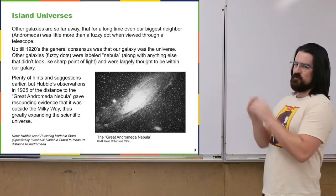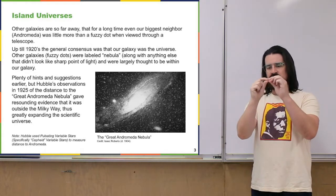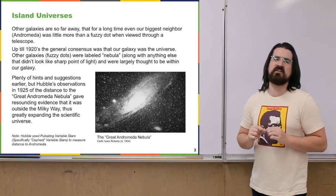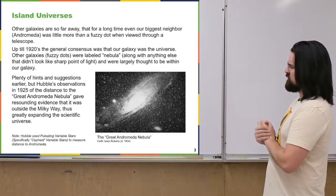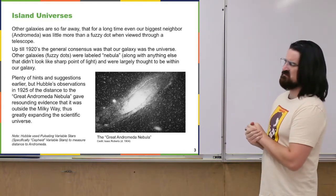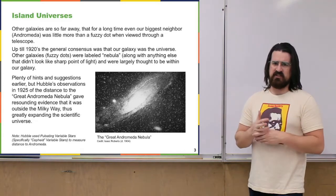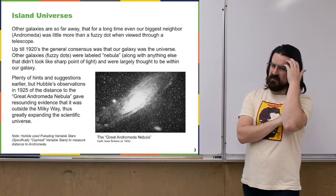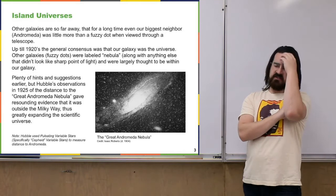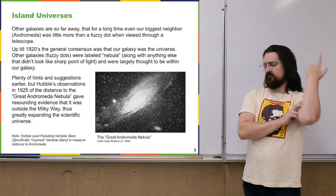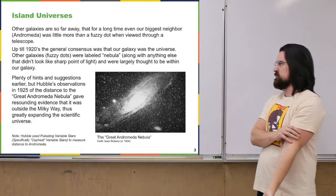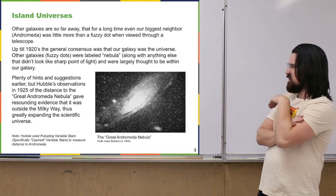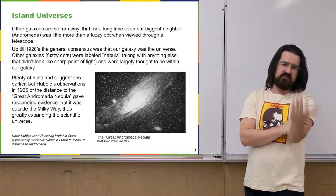The word nebula basically means cloud in Greek or something like that. If you weren't a straight-up point source — a little dot viewed through a telescope — they just called it a nebula. There were people who had different ideas about what some of these things were, but for the most part, the general consensus up until the 1920s was that our galaxy was basically it. Things were roughly within the volume of our galaxy, within a few tens or a hundred thousand light years from us.